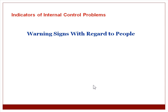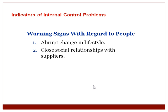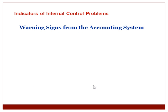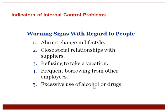There are warning signs of internal control problems with regard to people. These include an abrupt change in lifestyle, close social relationships with suppliers, refusing to take a vacation, frequent borrowing from other employees, and excess use of alcohol or drugs. As a manager on the financial side, you look for these things — you make staff take vacations, ensure people are cross-trained, and watch for relationships with suppliers and vendors where fraud would be more prevalent.